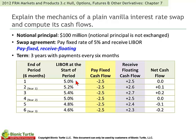At inception, time zero, LIBOR is 5%. That determines the first floating rate payment six months later when there's the first exchange, and they know that at time zero. The pay-fixed counterparty's outflow, signified as negative, is also known for the entire term.